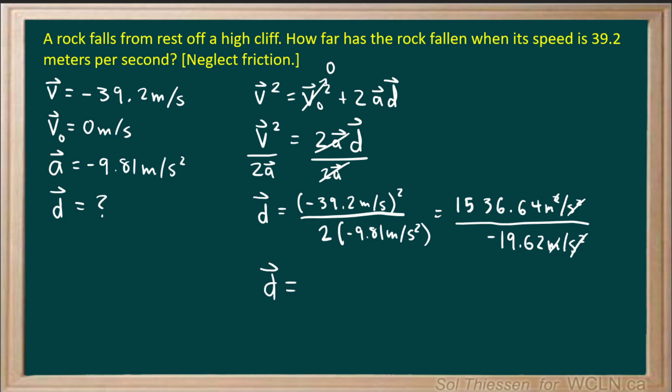So now if we perform this division, keep in mind that we only want to have three significant figures. We should find that it is equal to negative 78.3 meters.